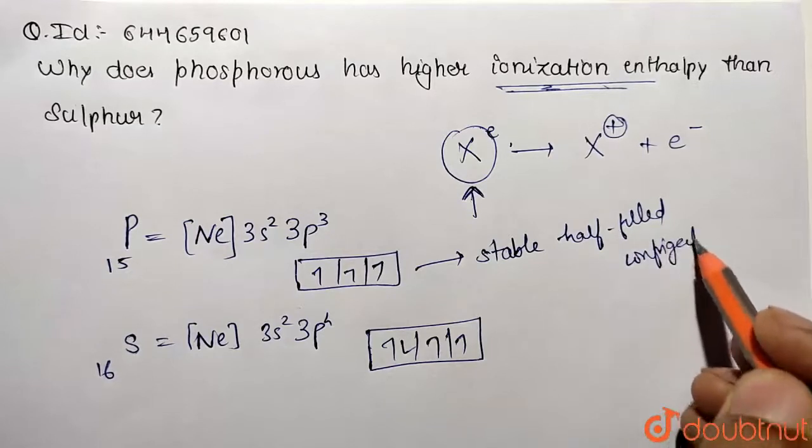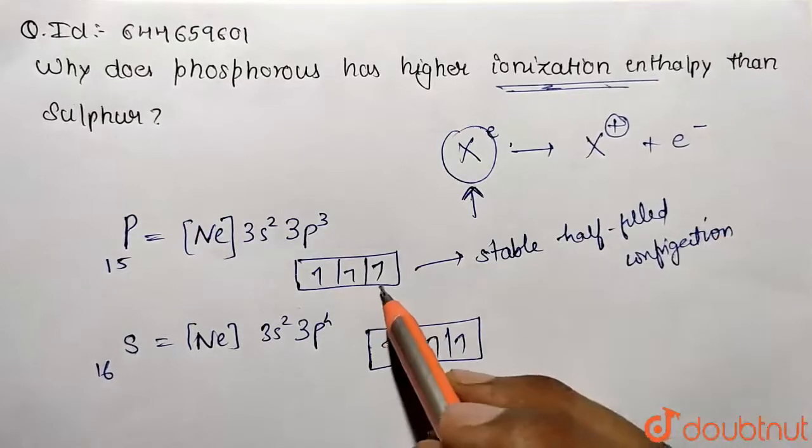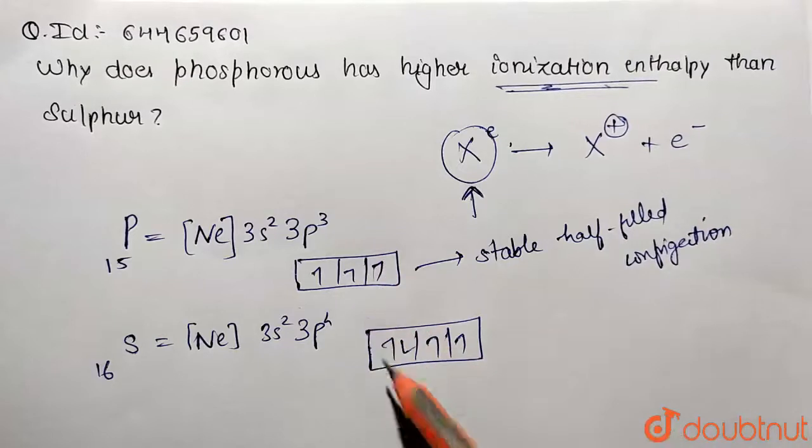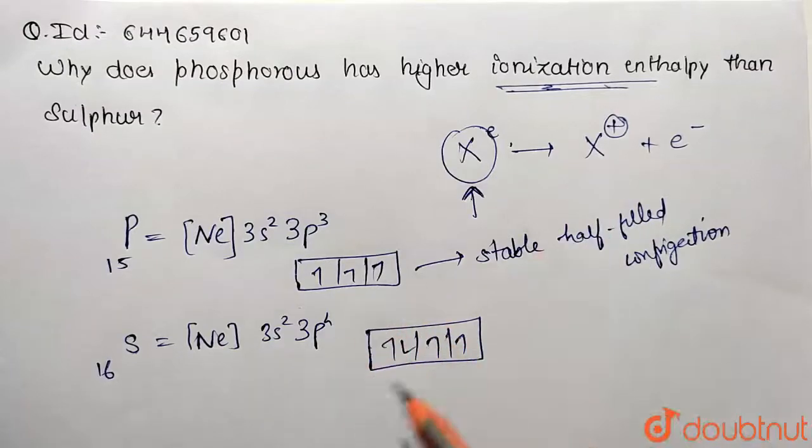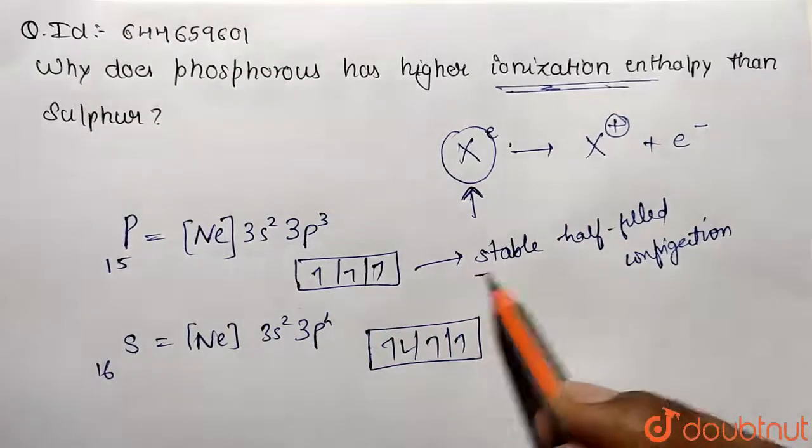So it is going to be requiring more energy to ionize an electron from this stable configuration whereas this is not stable so it can easily remove an electron to form corresponding cation. So this is how we have understood the reason is going to be stable.